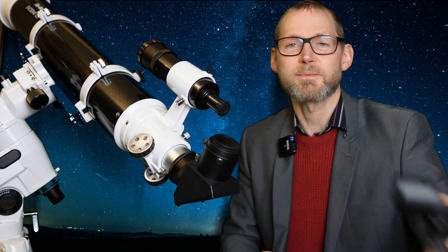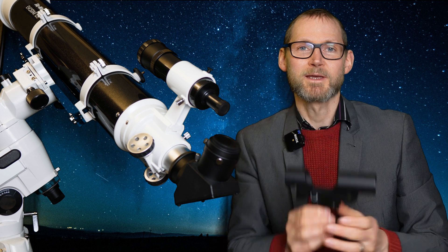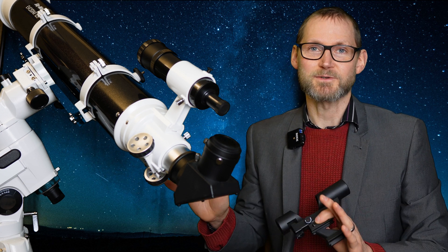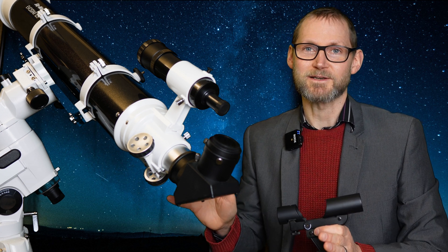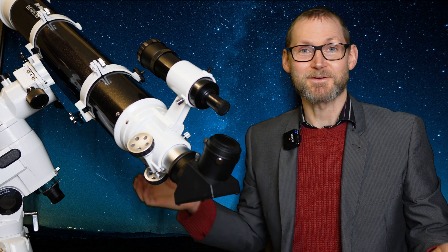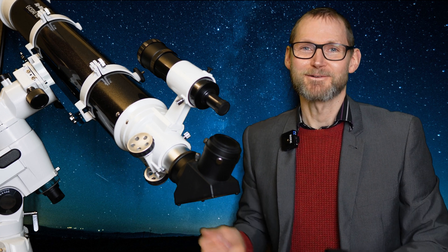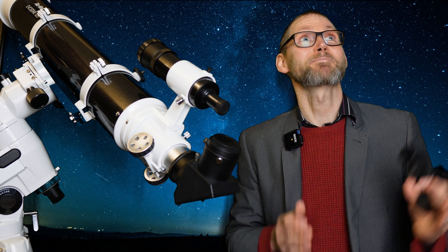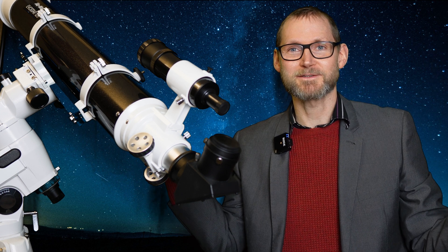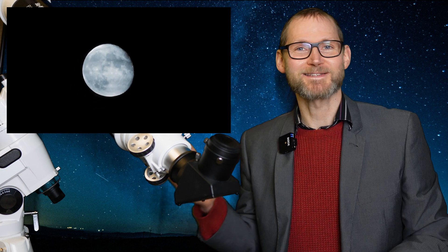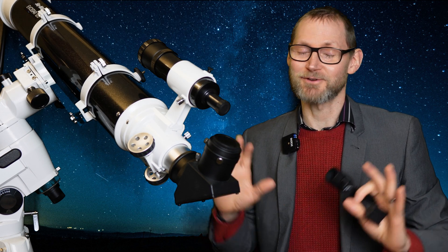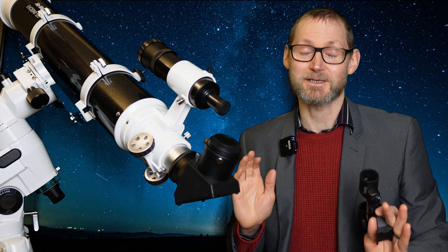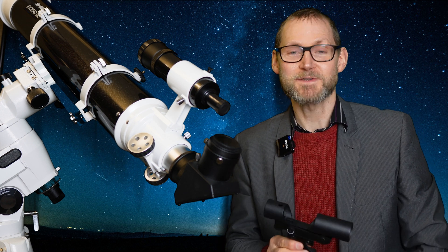But having a finder scope, whether it be an optical finder scope or a red dot finder scope, is going to make using your telescope a lot easier. Because believe it or not, it's difficult to find the moon without a finder scope. You can see it right up in front of you beaming away at you, but you try and point your telescope at it unless it's a really wide field telescope and it can be quite difficult.